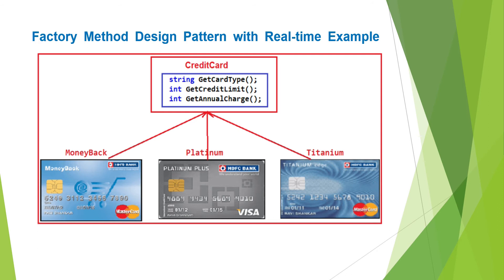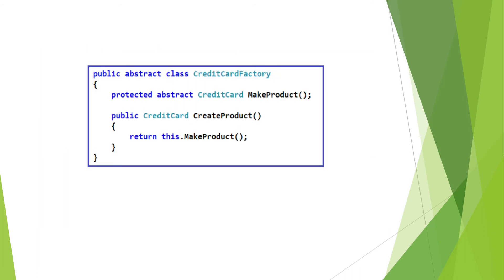As per the definition of the factory method design pattern, we need to create an abstract class or interface for creating the object. Here we are creating an abstract class — this is our abstract factory class — which declares the factory method: createProduct. That factory method will take the responsibility to create and return an object of the product class, either MoneyBack, Titanium, or Platinum, and return that object through the superclass Credit Card. The credit card factory class contains two methods: one abstract method, makeProduct, implemented by the child classes, and one concrete method, createProduct, which internally calls the makeProduct method of the child class.